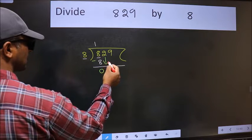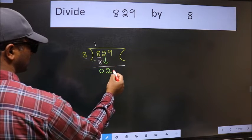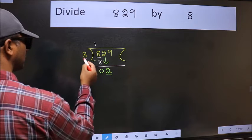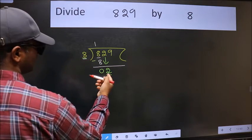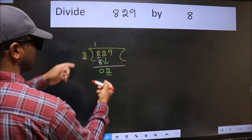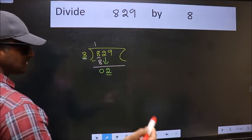After this, bring down the beside number. So 2 down. Now here we have 2 and here 8. 2 is smaller than 8, so we should bring down the second number.